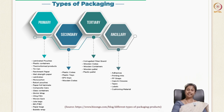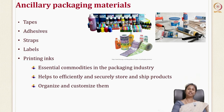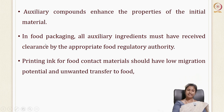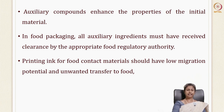So what are ancillary packaging materials? Examples include adhesives, printing inks, polypropylene straps, tapes, labels, and cushioning materials. These are essential commodities in the packaging industry that help to efficiently and securely store your products and help to organize and customize products in the packaging material. In food packaging, all ancillary materials should receive clearance from the food regulatory authority. For example, printing inks should be such that there is no migration from the package into the food.